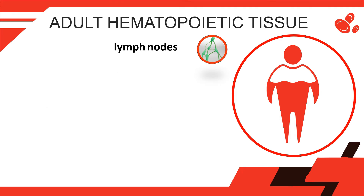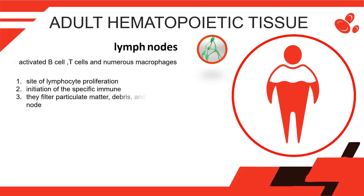Lymph nodes are organs of the lymphatic system; they contain foci of activated B-cells, T-cells, and numerous macrophages. Lymph nodes have three main functions: they are a site of lymphocyte proliferation from the germinal centers; they are involved in the initiation of the specific immune response to foreign antigens; and they filter particulate matter, debris, and bacteria entering the lymph node via the lymph.